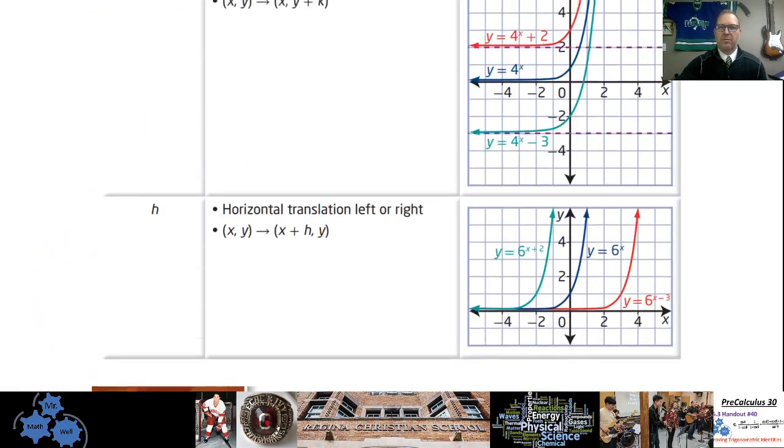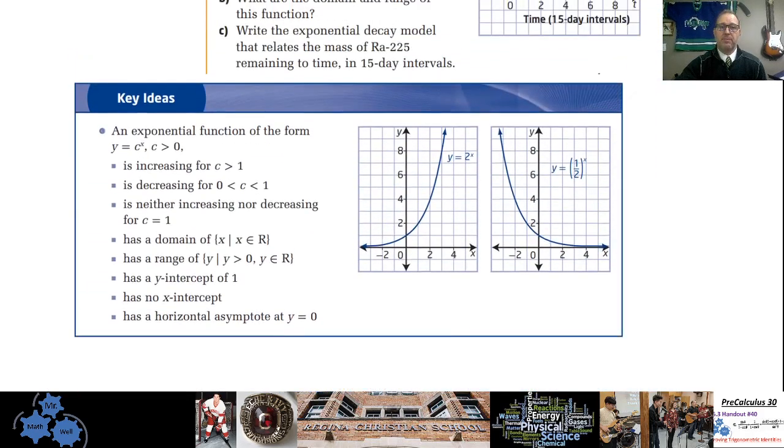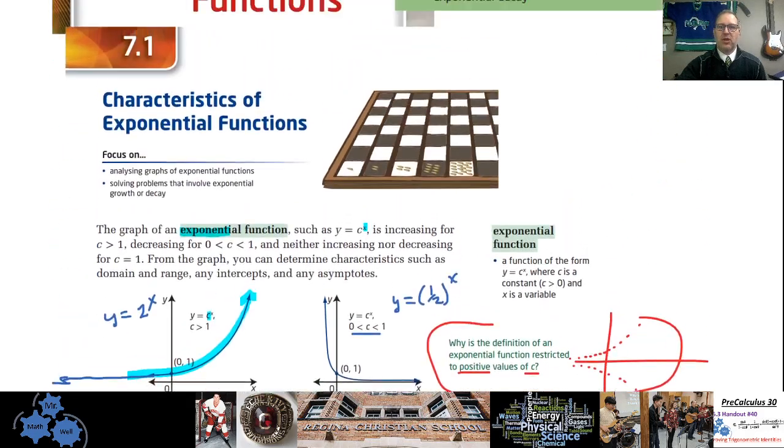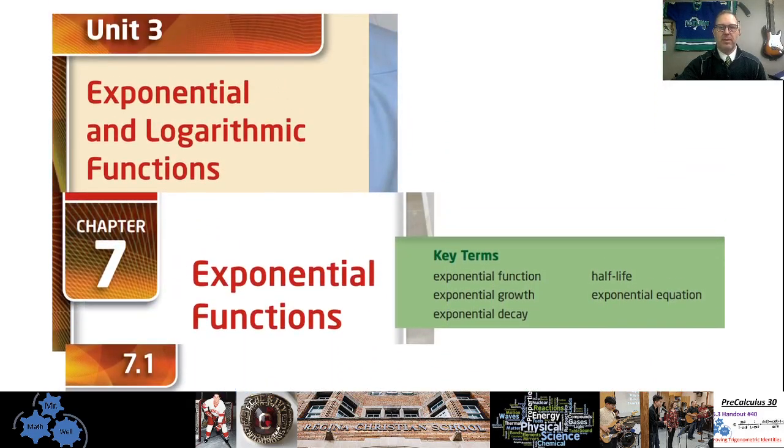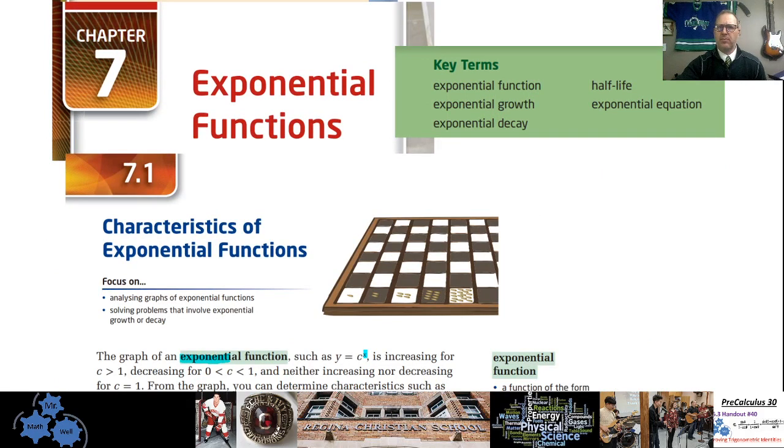Alright, so that is 7.1 to 7.3 and a little quick review for chapter 7, pre-calculus 30. Yeah, leave a comment below, like, or subscribe, and if you have any questions, please reach out. But yeah, look over your stuff. Make sure you've done your homework. And yeah, good luck on your test tomorrow.